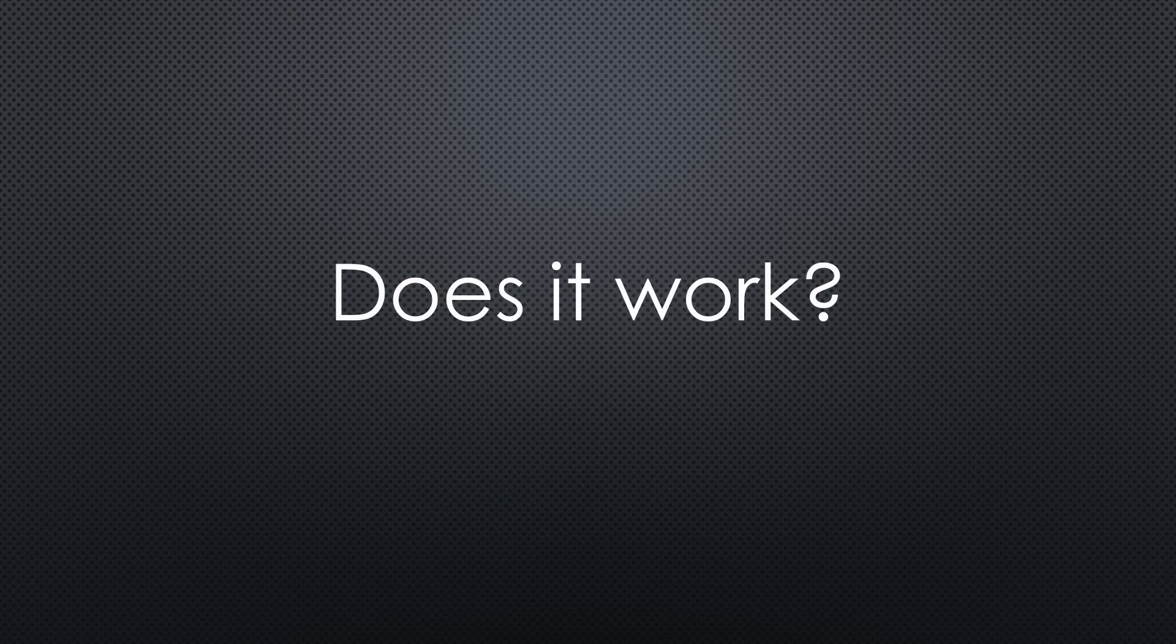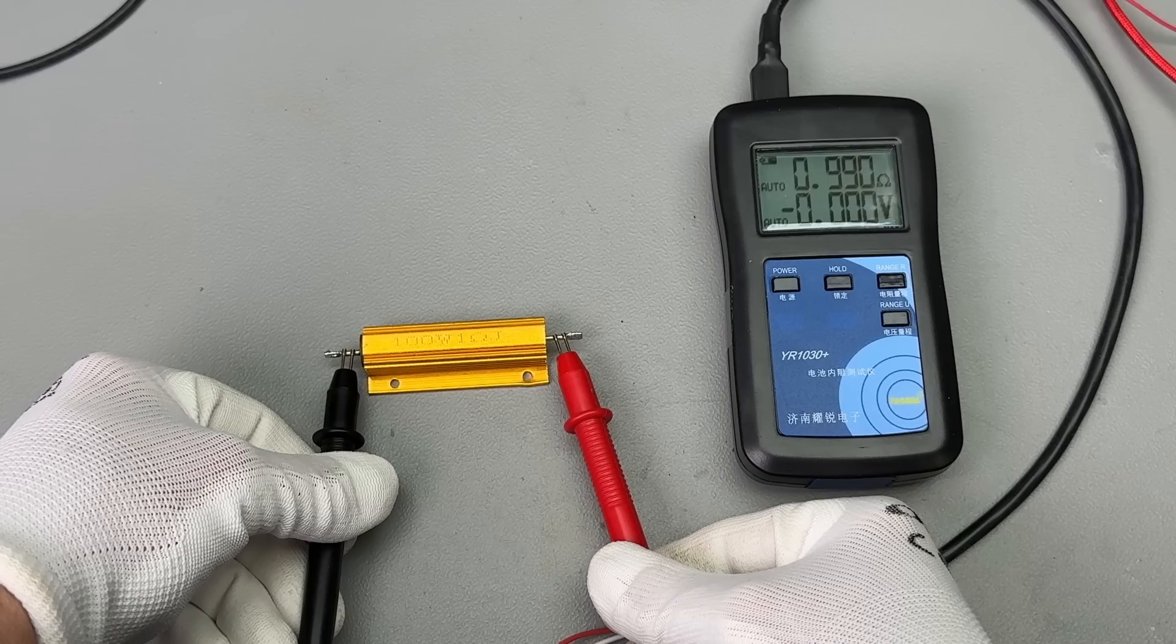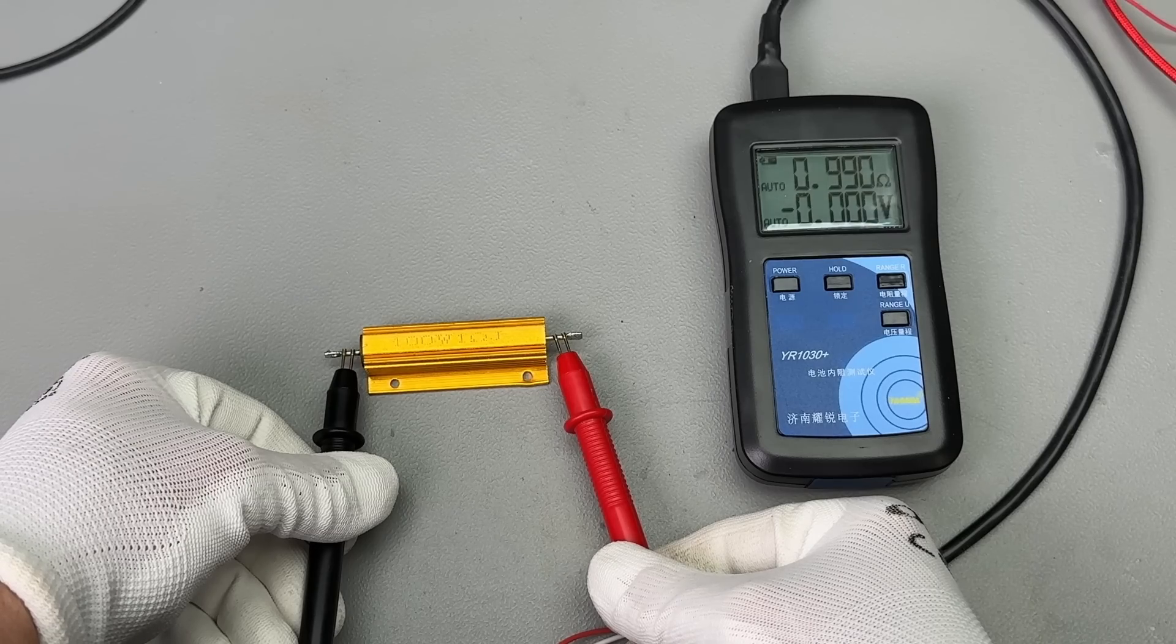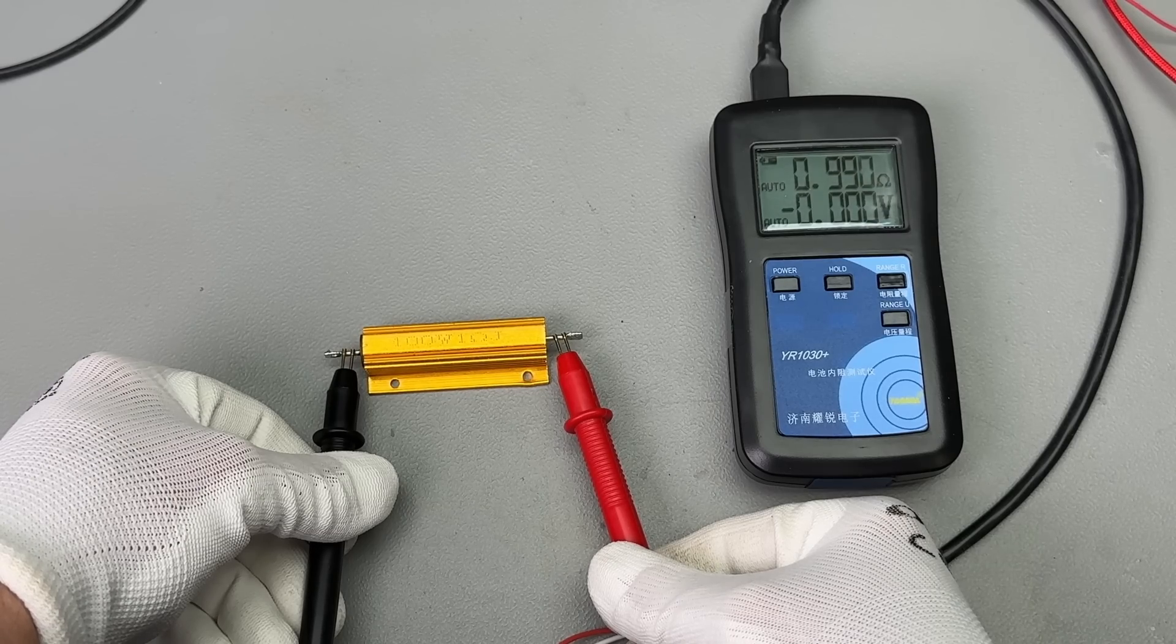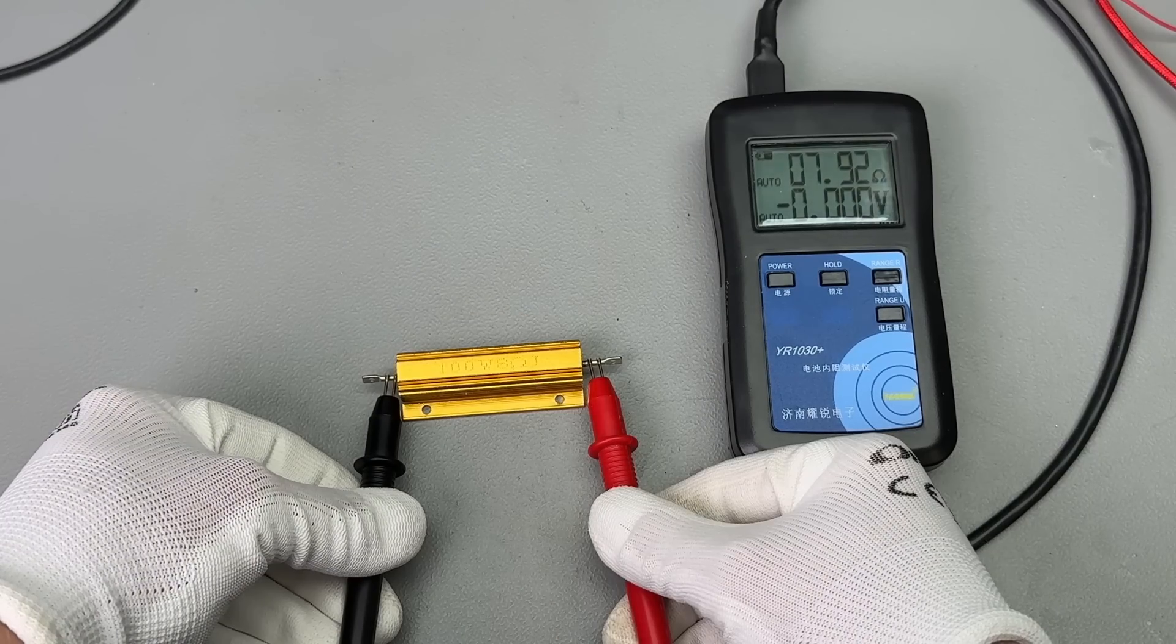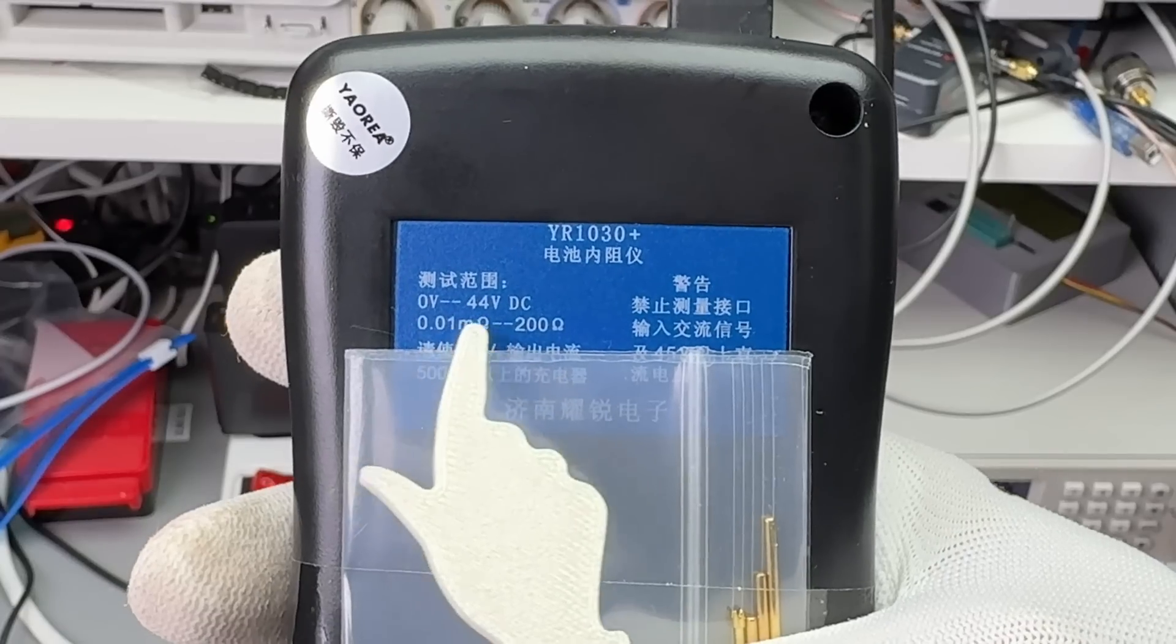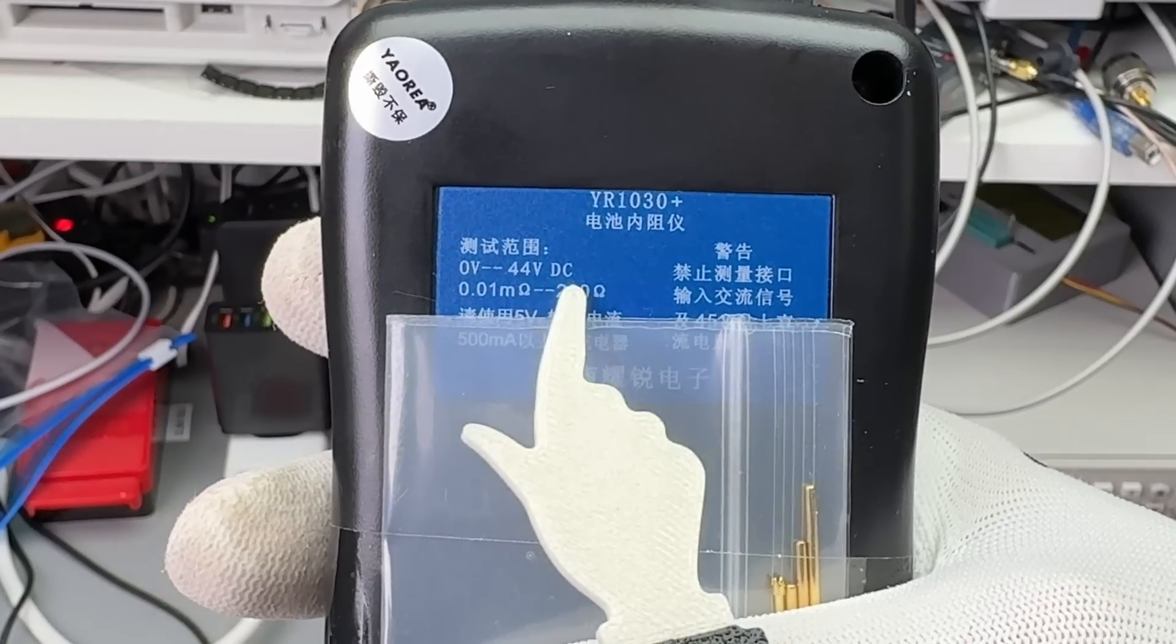To validate accuracy, we can measure known resistors. For instance, this instrument gives readings consistent with my multimeter for 1 ohm and 8 ohm resistors. It works up to 44 volts, by the way.